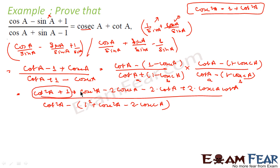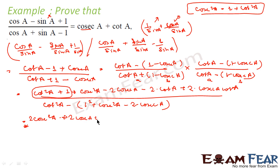Now we'll use cosec²A = 1 + cot²A. So cot²A plus 1 becomes cosec²A, and cosec²A plus cosec²A becomes 2·cosec²A in the numerator. In the denominator, cot²A minus cosec²A is nothing but minus 1. So we can group terms: taking 2·cosec²A and then pairing 2·cot A·cosec A, and minus 2·(cosec A plus cot A).